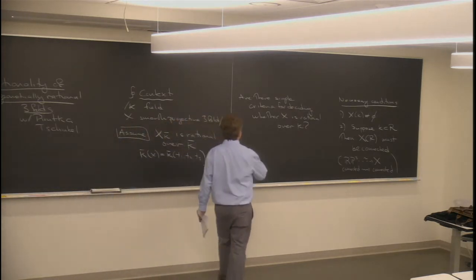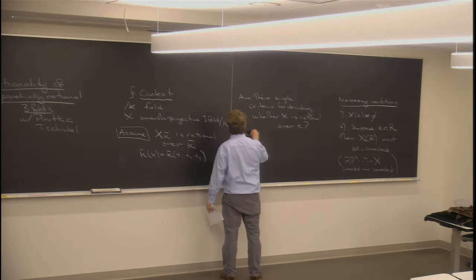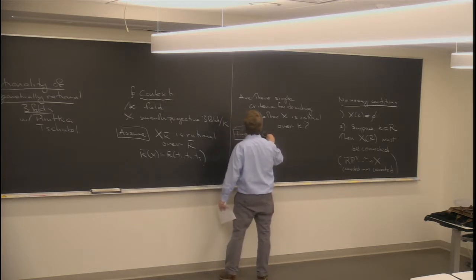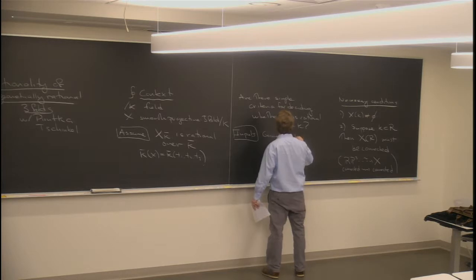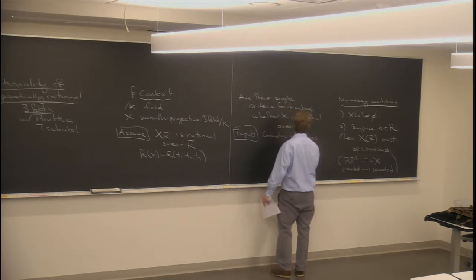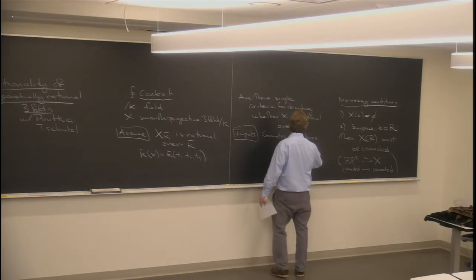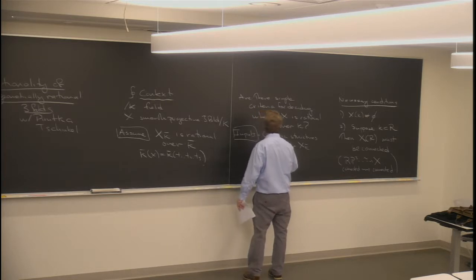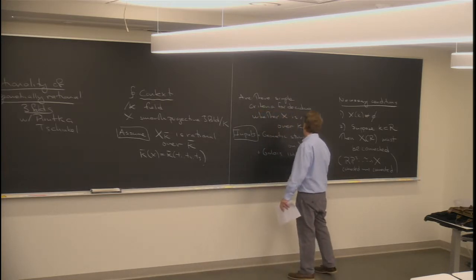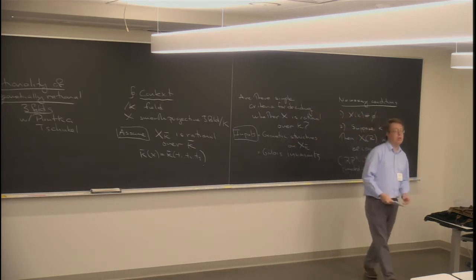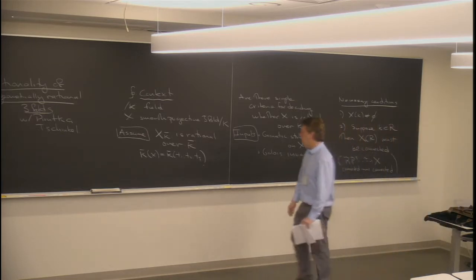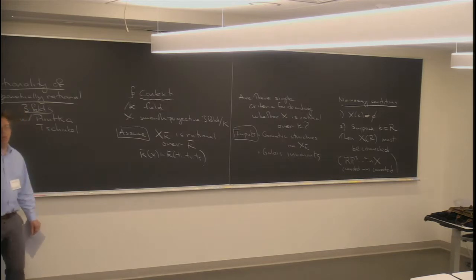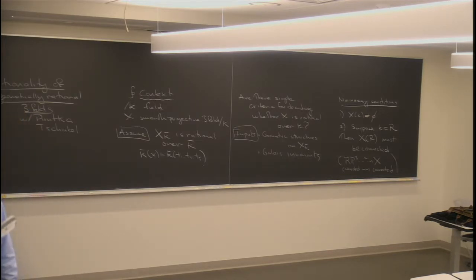The inputs that should go into this characterization: certainly it should depend on the geometry — the geometric structures on x over the algebraic closure — but it also should depend on Galois-type invariants, Galois cohomology of structures that show the interaction of the Galois group of our ground field with the geometric algorithm. Most of the results I'll present today are joint with Yuri Chinkel, and a few of them are joint with Alina Perutka.